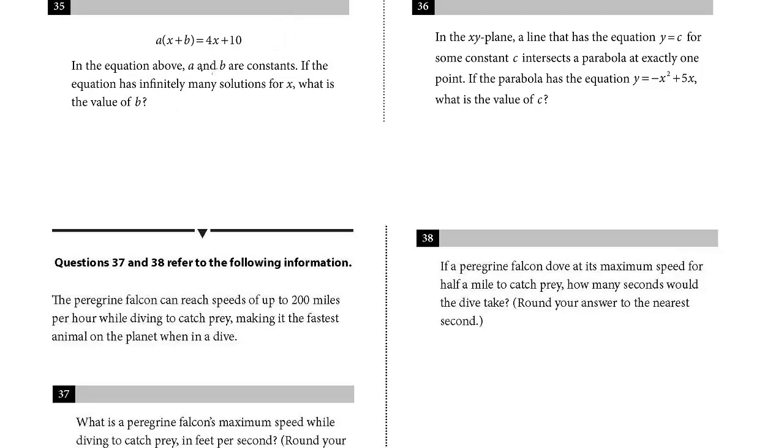In the equation above, a and b are constants. If the equation has infinitely many solutions for x, what's the value of b? So infinitely many solutions means that the two lines are equivalent. We've seen this with systems of equations, and this is no different.